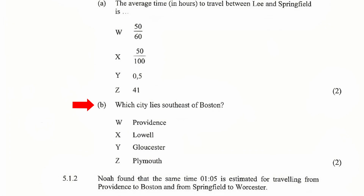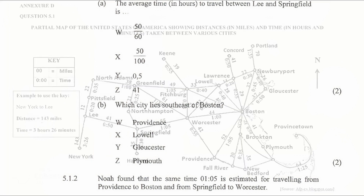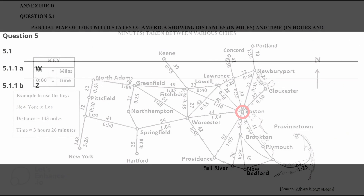5.1.1(b): Which city lies southeast of Boston? W) Providence, X) Lowell, Y) Gloucester, or Z) Plymouth. From the map in Annex D, the city that lies southeast of Boston is Plymouth, so the correct answer to 5.1.1(b) is Z.